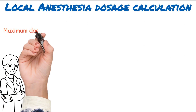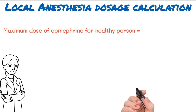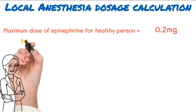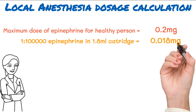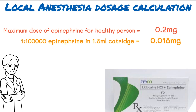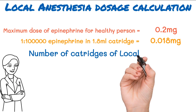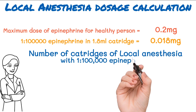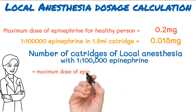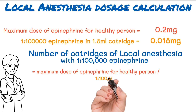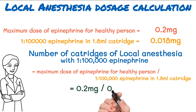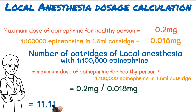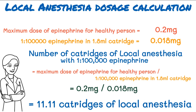The maximum dose of epinephrine for a healthy person is 0.2 milligrams, and a 1.8 milliliter cartridge with 1:100,000 epinephrine contains 0.018 milligrams. The number of cartridges that can safely be given to a healthy person is 0.2 milligrams divided by 0.018 milligrams, equal to 11.11 cartridges of local anesthesia containing 1:100,000 epinephrine.